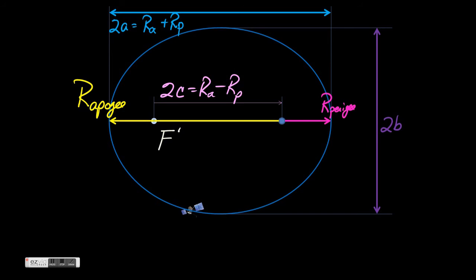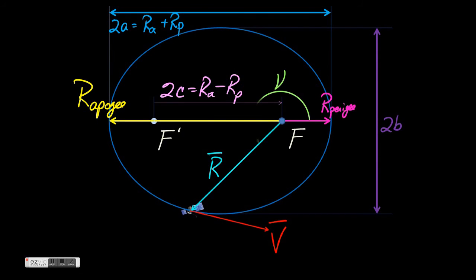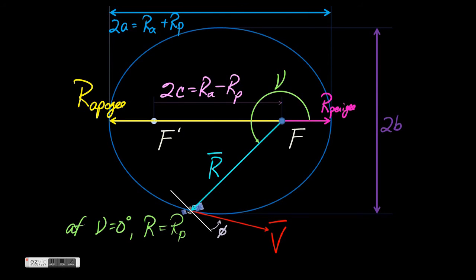If we look at the satellite in another position in its orbit, this all works the same: r and v vectors, the true anomaly, and then our flight path angle. When our satellite is increasing in altitude, phi is positive. When it's heading towards perigee, phi is negative. If true anomaly is zero at perigee or 180 degrees at apogee, then phi is zero — our r and v vectors are perpendicular to each other at these points. Phi is also zero everywhere in a circular orbit.